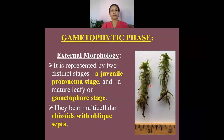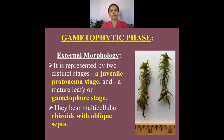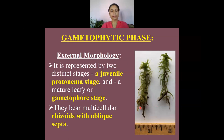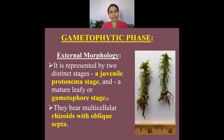The gametophytic phase of Sphagnum has a very distinct external morphology. It is represented by two distinct stages: the first is the juvenile protonema stage, produced immediately after the germination of the spore, and the second is the mature leafy gametophore stage. In the juvenile stage, rhizoids are present with oblique septa, but these rhizoids are absent in the mature leafy gametophore stage.